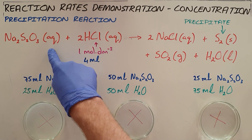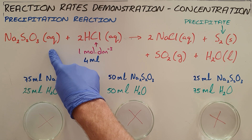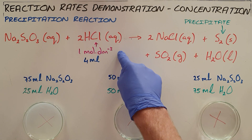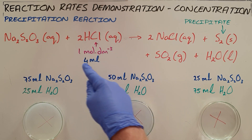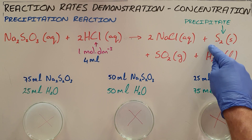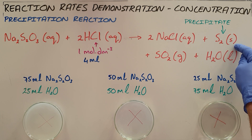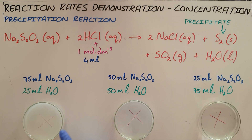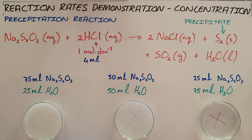Therefore there would be more collisions between sodium thiosulfate and hydrochloric acid, so we would expect the precipitate — that white powder — to form faster, which is what we see happening here. The white powder drops to the bottom of the petri dish, forming a layer that stops us from seeing the X marked at the bottom.